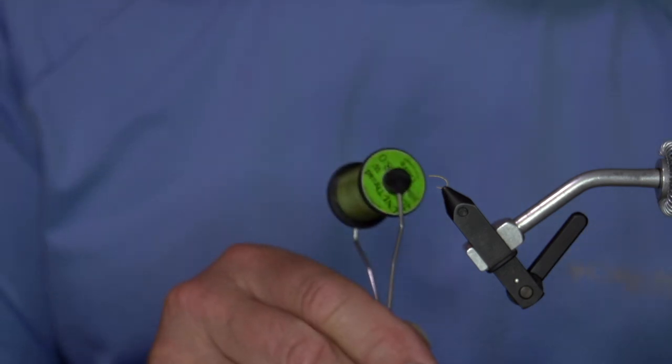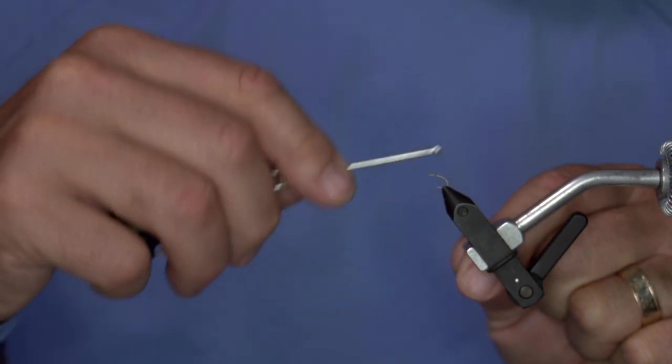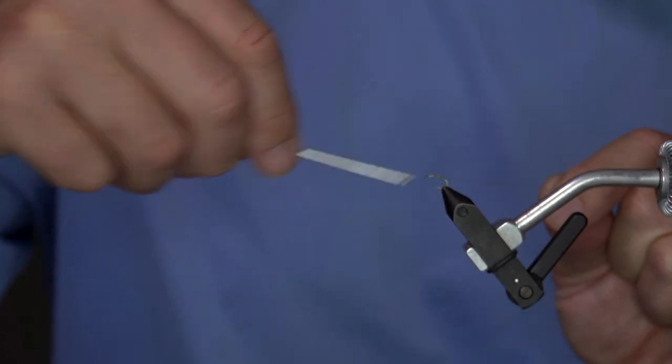For thread, I'm using Uni 8/0. Just like it, been tying with it for years. You can use your thread of choice. I'm using olive here. If your baetis are more brown when they are nymphs near you, feel free to use that.